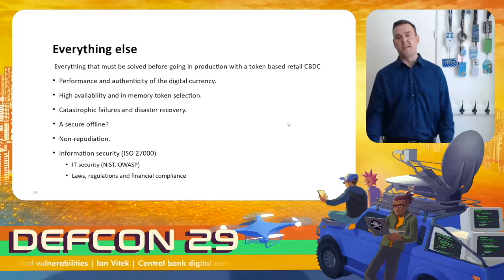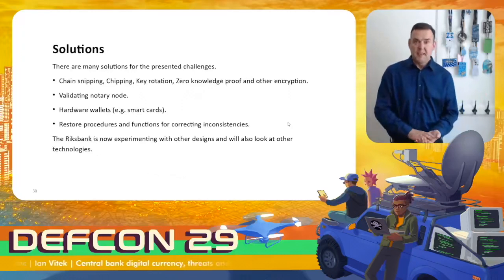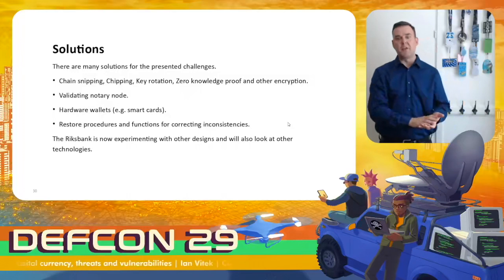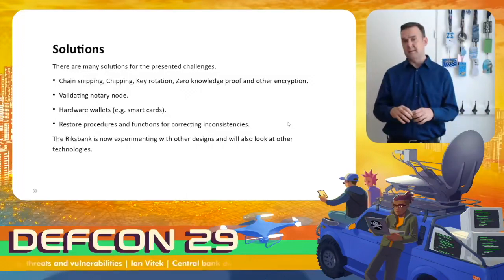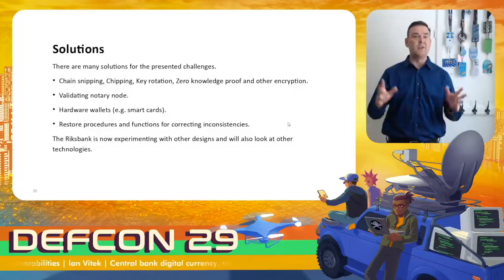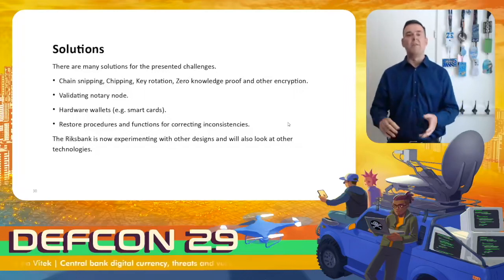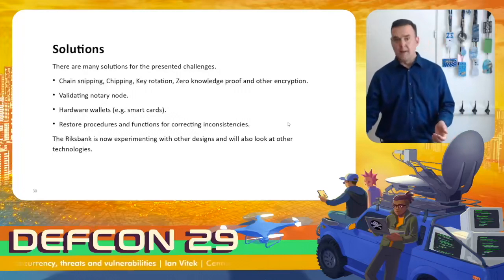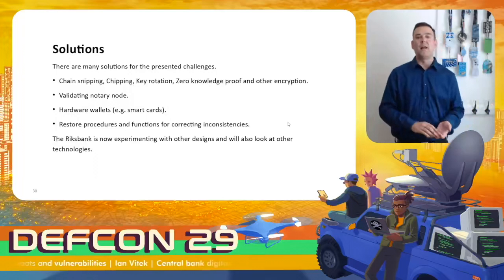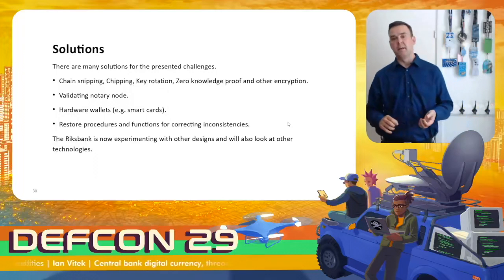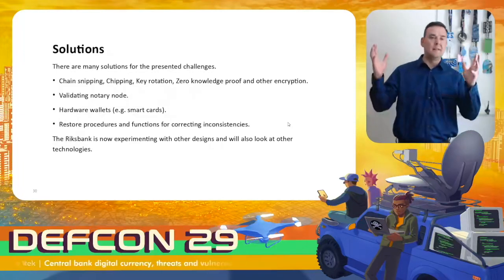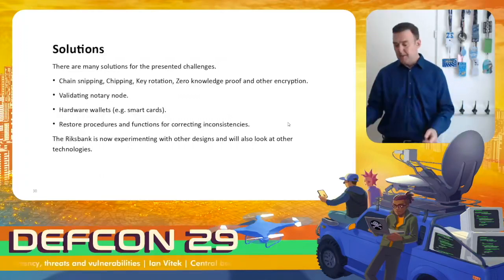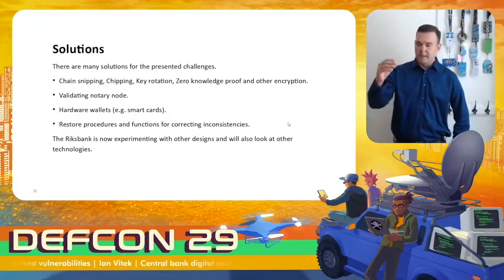We have all the IT security to solve before going to production — and of course compliance, laws, regulation, and financial compliance. There are many solutions for the presented challenges. There is chain snipping, key rotation, zero-knowledge proof, and other encryption to solve some things. We have validating notary nodes to solve other things, and we have hardware wallets. Maybe those could work with offline. And then restore procedures and functions for correcting inconsistencies. Maybe we can fix everything — it's a technical project and we probably can solve it technically. The Riksbank is now experimenting with other designs and will also look at other technologies. But every solution will have its own consequences — if we solve one thing, we may have other problems like performance or other issues.